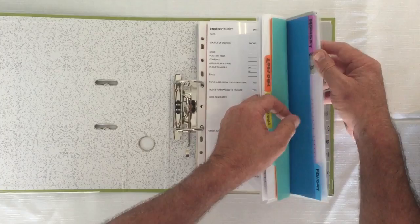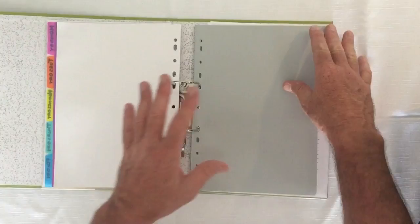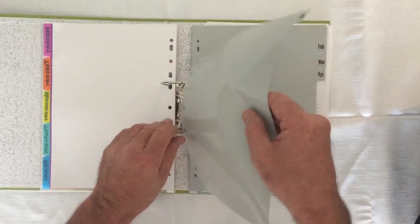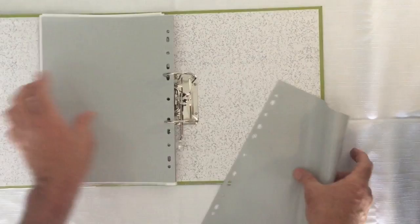So what happens is, we're currently in January for example. At the beginning of January, you'll pull all the plastic sleeves out that were in January. You take January, take it out of the folder, and you put it to the end of the year so that January is now there.